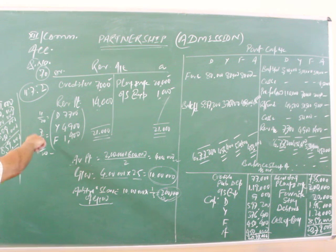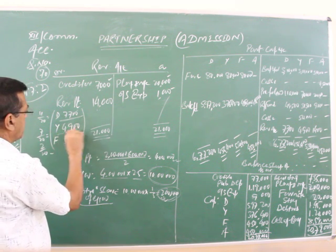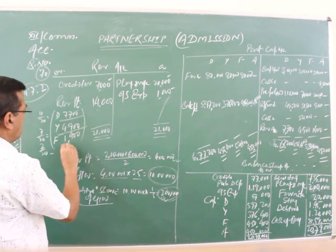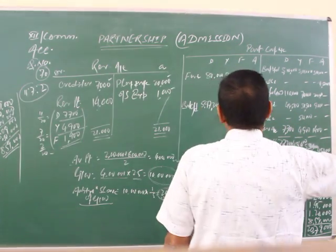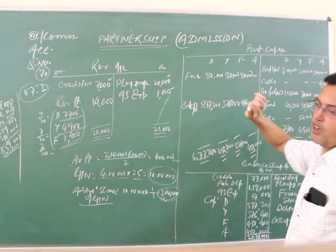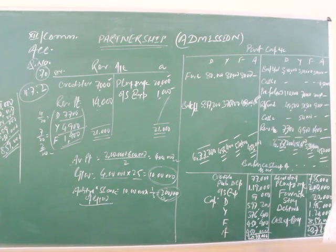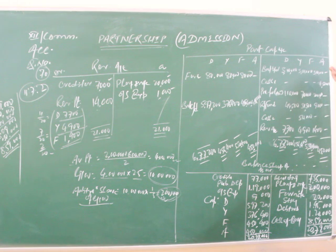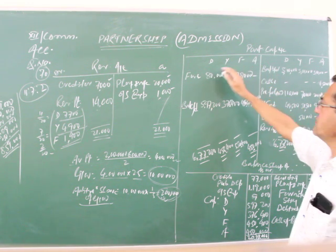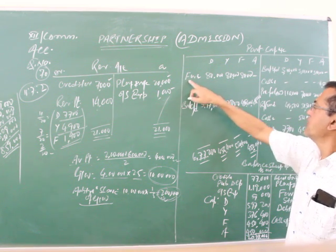So now 11 by 20, 7 by 20, 2 by 20. Dibya is getting 7,700, Yassim is getting 4,900, and Fatima 1,400. After this, you are required to prepare the partner's capital account. There are 4 partners now: 3 are the existing partners and Adit is admitting. So now partner's capital account, particulars and amounts. A small space, that's why I have noted down like this.